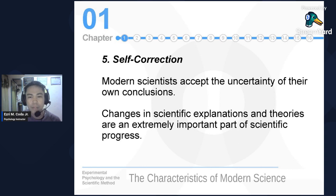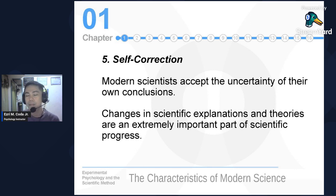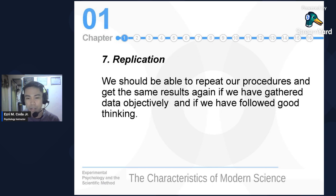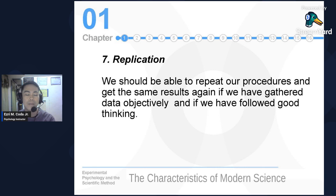Modern scientists accept the uncertainty of their own conclusions. Changes in scientific explanations and theories are an extremely important part of scientific progress — if someone disproves your conclusions after replications, you must correct yourself and accept it. Also, desiring results: research results are useless if not shared with others, so sharing must be the main goal. Replication is also very important — being able to replicate protocols, treatments, and conditions is one way of checking the validity of our research.